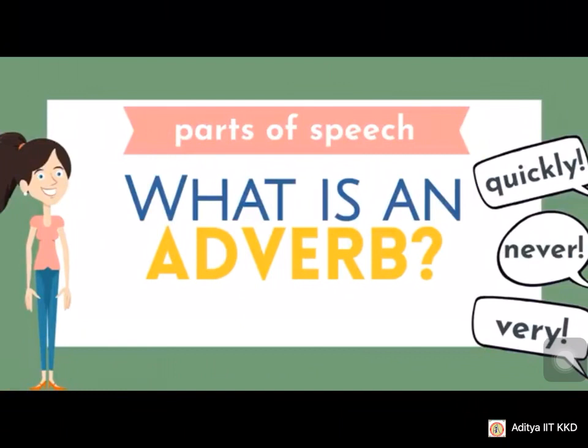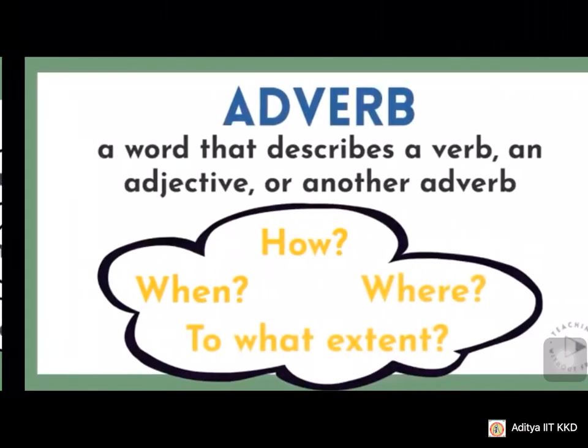What is an adverb? Some of the words are: quickly, never, very — these are adverbs. Why? Here is the definition: a word that describes a verb, an adjective, or another adverb. Adverb tells about a verb — how the action is done. It also describes an adjective or another adverb. How can you recognize an adverb? By framing questions using: how, when, where, and to what extent? If you are able to answer these four questions, then you can recognize that the word comes under adverbs.